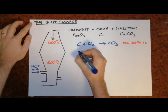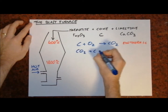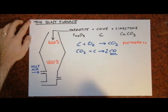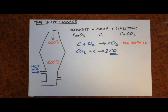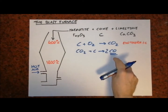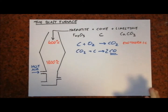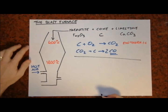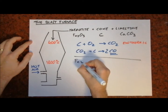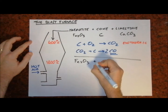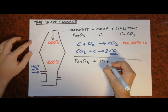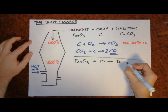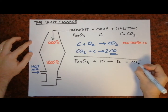Carbon monoxide is another reducing agent. CO₂ plus carbon gives two carbon monoxide — and that is a reducing agent. The carbon monoxide is going to reduce the iron three oxide to form iron, which is what we're looking for, and carbon dioxide.